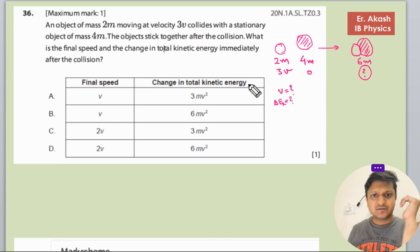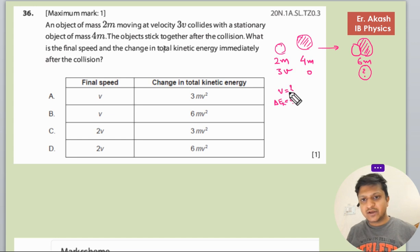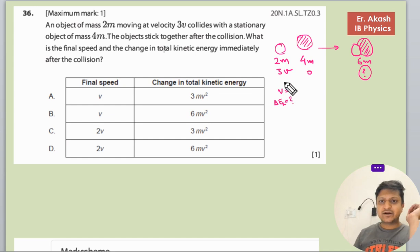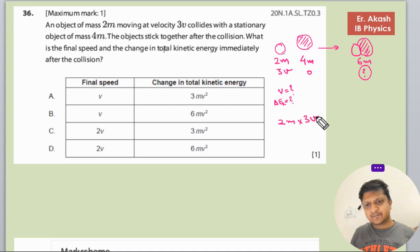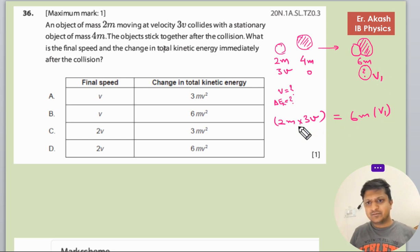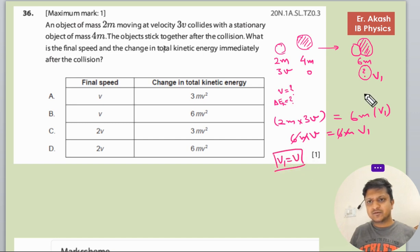First, we will use conservation of momentum. The momentum of each body before collision equals the final momentum, so it's 2m × 3v plus 0 equals 6m × v1. This gives 6mv = 6mv1, so 6m cancels and v1 equals v. So our answer for velocity is v, meaning the answer is from option A or B.